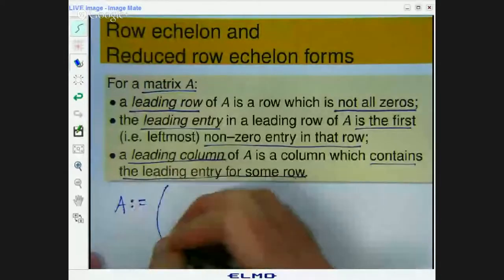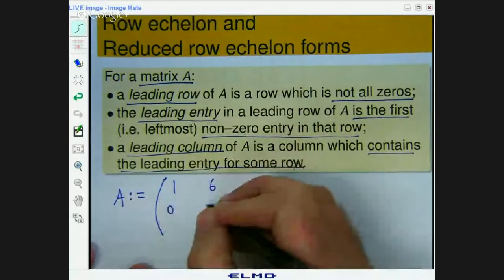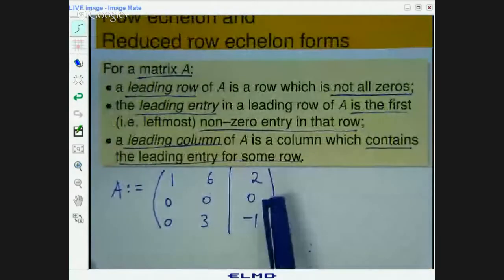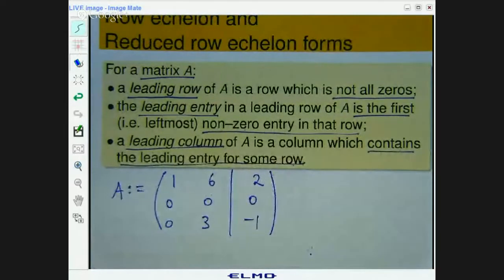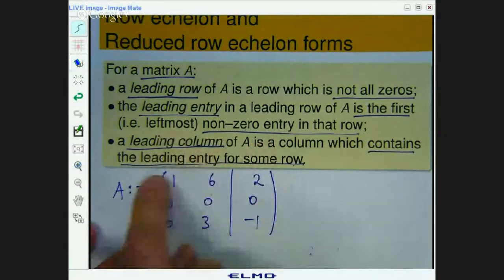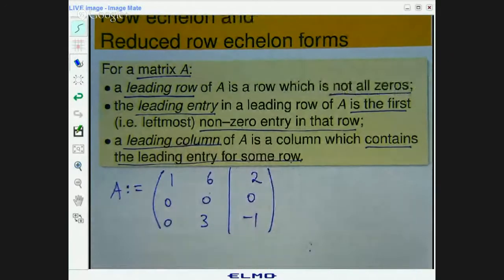Alright, so let's take a matrix: 0, 1, 6, 2, 0, 0, 0, 0, 3, negative 1. Let's make it an augmented matrix. So this might correspond to a linear system of simultaneous equations. Ok, so remember rows go horizontally, columns go vertically. So that's row 1, that's row 2, that's row 3, column 1, column 2, column 3. Alright, so let's identify some leading rows and some leading columns.